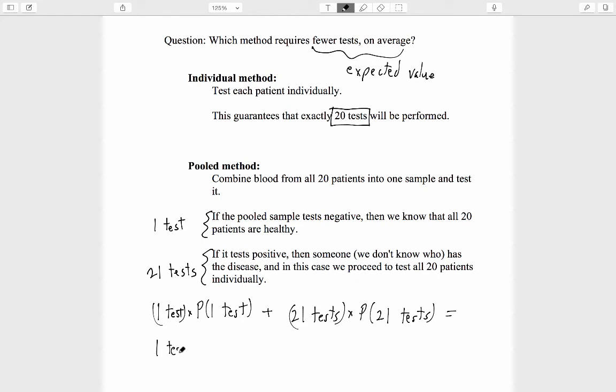So this equals one test times the probability that everyone is healthy. That's what would have to happen for us to get away with doing only one test. And that is a job for the binomial probability model. Right?